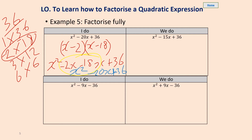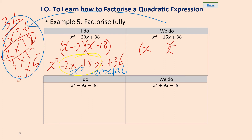Now we're looking for two numbers that give us negative 15, using the factors listed. Pause the video while you have a go. We've got x in both brackets. You should have chosen x subtract 3 and x subtract 5. 3 times 5 is 15, and negative 3 times negative 5 gives us positive 15.